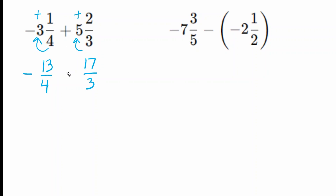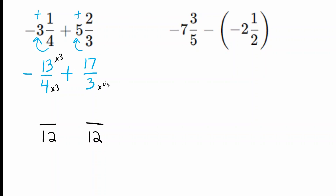We slide our plus sign directly below. Next, we find our lowest common denominator, which in this case is 12. To turn the four into 12, we multiply by three, so we increase the numerator by a factor of three. The three became four times bigger, so we increase the 17 by a factor of four. 13 times three is 39, and 17 times four is 68.